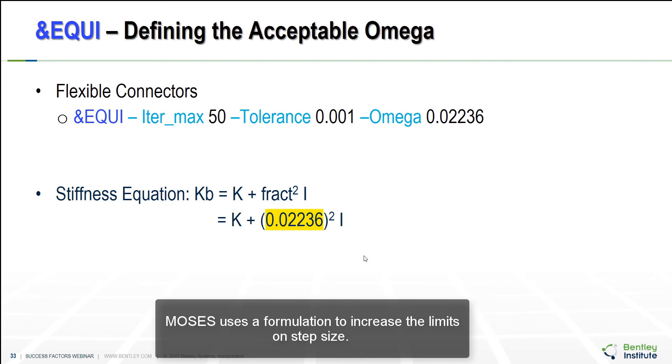Moses uses a formulation to increase the limits on step size. The omega is limiting the step size to minimize the chance of a singular stiffness and also reduces the step size to avoid a possible singularity in the stiffness. Moses augments the stiffness with a fraction of the initial in the stiffness equation. We can specify a fraction to fix the singularity problem. Because for degrees of freedom where k is not singular, the initial term will be negligible. And for singular degrees of freedom k, it adds a term on the diagonal.